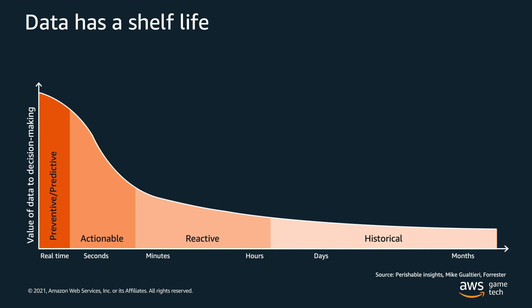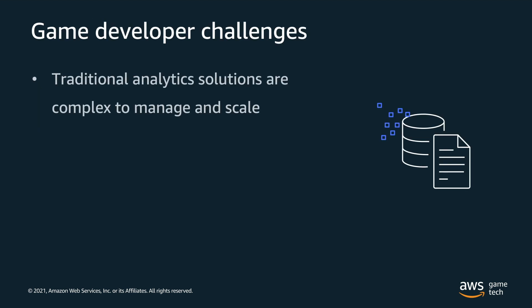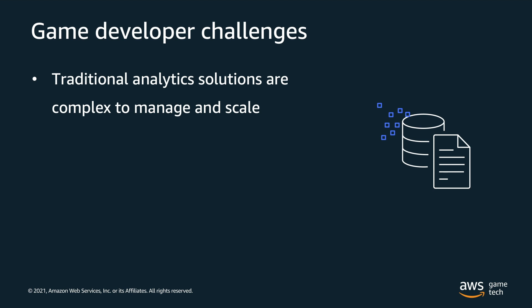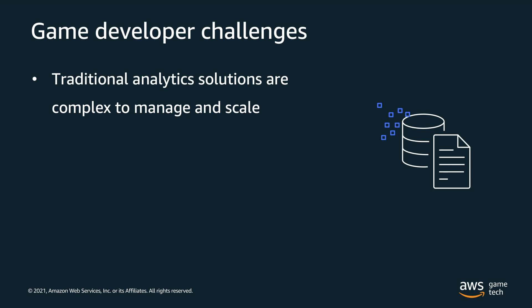With this comes the challenge of managing data at those different speeds. Another challenge we commonly see is that traditional analytic solutions are hard to manage and scale, especially if you don't have the time to manage infrastructure. As a result, people typically go to out-of-the-box solutions, but these solutions aren't really flexible. They can create data silos, meaning that instead of having your data in one centralized place that makes it easy for analytics, your data lives in a lot of separate places, which makes it hard to get insights across all of your data. These out-of-the-box solutions are also not extensible if you want to incorporate live ops, AI/ML, or more advanced analytics down the road.